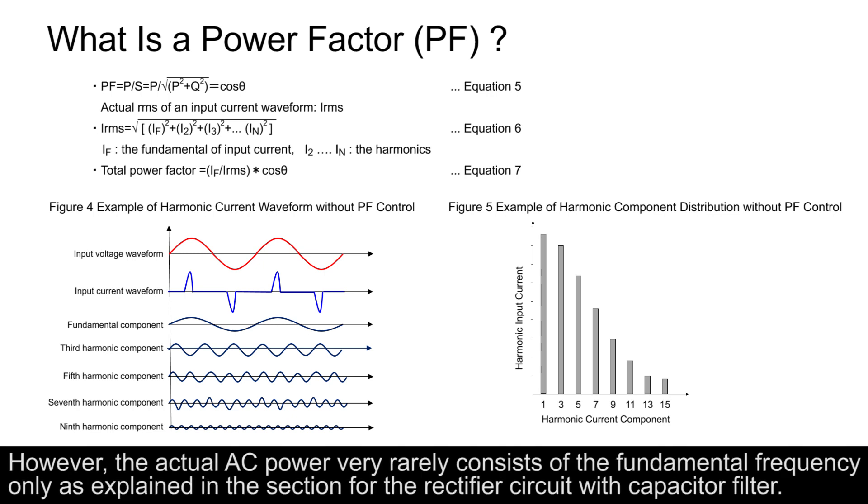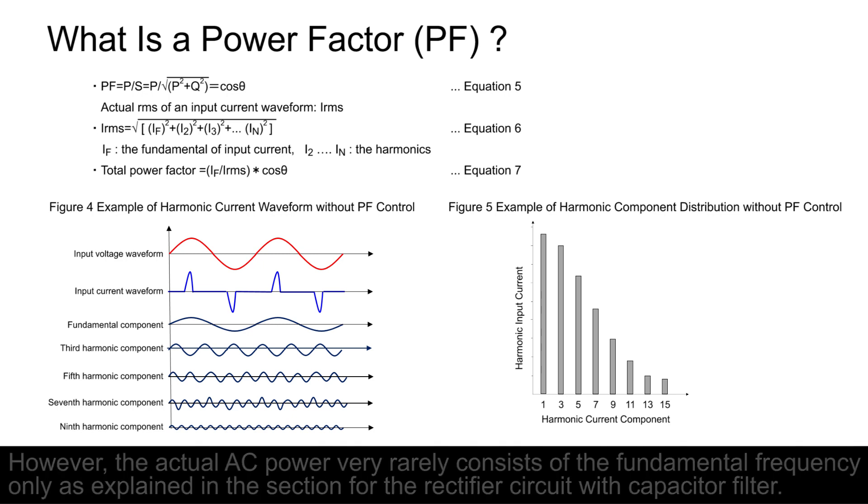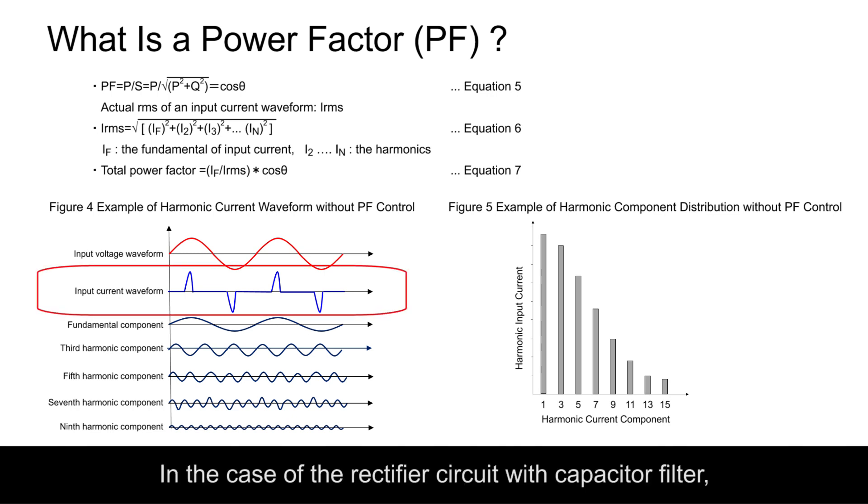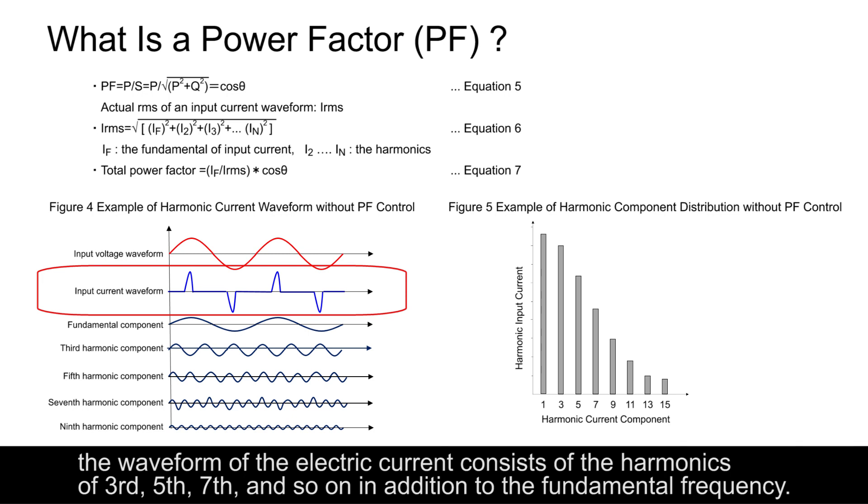However, the actual AC power very rarely consists of the fundamental frequency only as explained in the section for the rectifier circuit with capacitor filter. Figure 4 shows the waveform in this circuit. In the case of the rectifier circuit with capacitor filter, the waveform of the electric current consists of the harmonics of 3rd, 5th, 7th, and so on, in addition to the fundamental frequency.